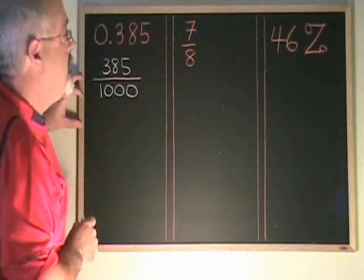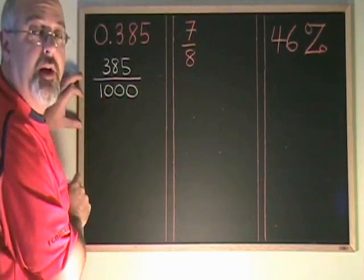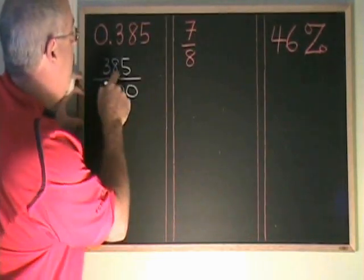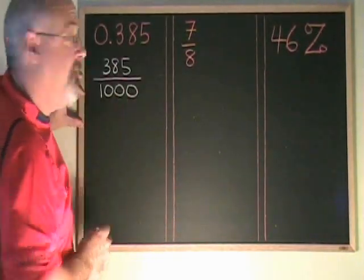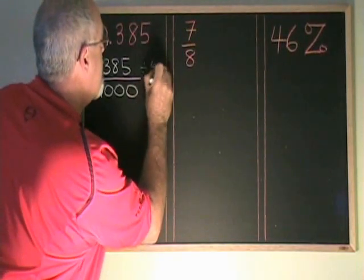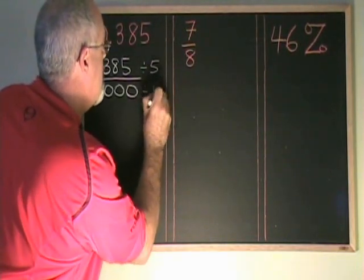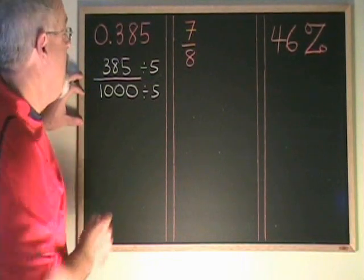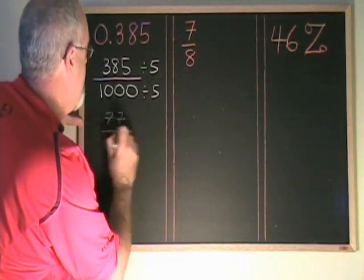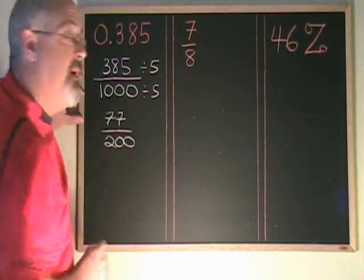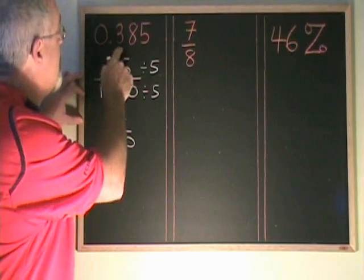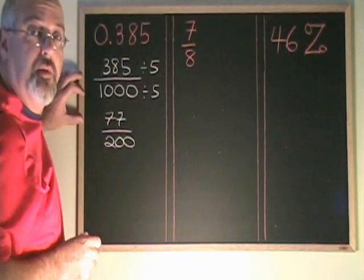We have now converted 0.385 into a fraction, but this fraction can be reduced, so we will do that. Both the top and the bottom have a common factor of five, so I will divide both the top and bottom by five. I get 77 over 200, which cannot be reduced anymore, so I have converted my decimal into a fraction reduced to lowest terms.